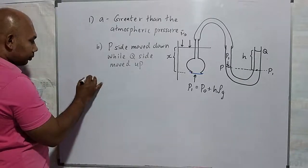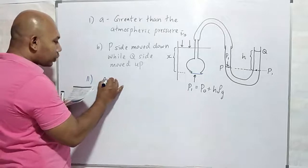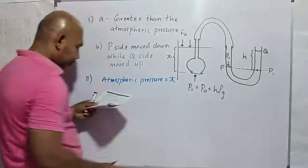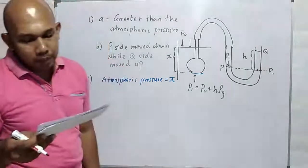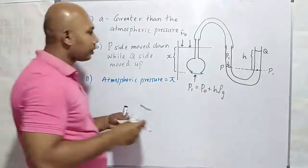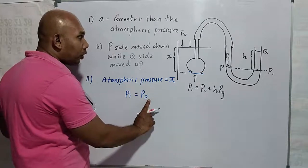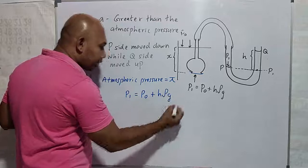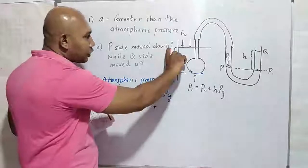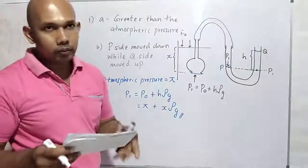Second question: If atmospheric pressure is given as 5, write down an expression for the pressure of air in the thistle funnel, where the density of water is ρ and acceleration due to gravity is g. P1 is equal to atmospheric pressure P0 plus liquid pressure HρG. Since atmospheric pressure is given as 5, instead of P0 write 5, plus XρG. This is the total pressure exerted on the balloon membrane.